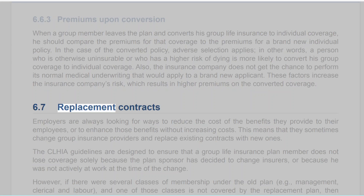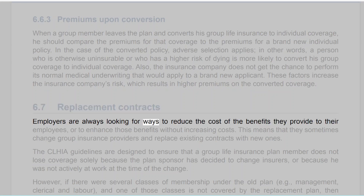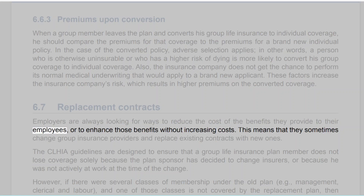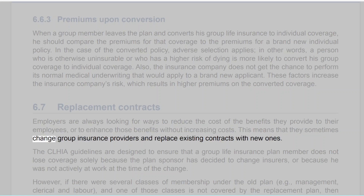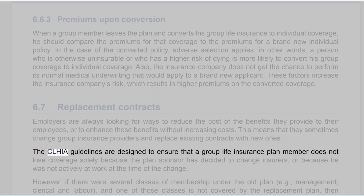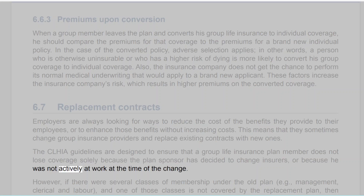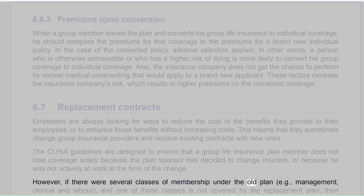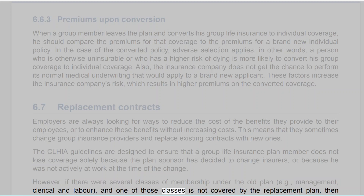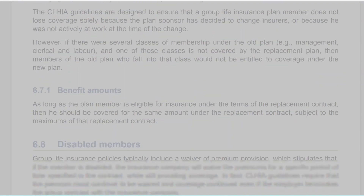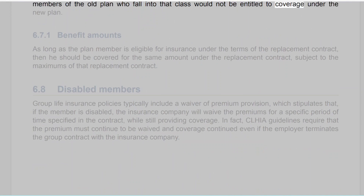6.7 Replacement Contracts. Employers are always looking for ways to reduce the cost of the benefits they provide or to enhance those benefits without increasing costs, which means they sometimes change group insurance providers and replace existing contracts with new ones. The CLHIA guidelines are designed to ensure that a group life insurance plan member does not lose coverage solely because the plan sponsor has decided to change insurers or because he was not actively at work at the time of the change. However, if there were several classes of membership under the old plan — such as management, clerical and labor — and one of those classes is not covered by the replacement plan, then members of that class would not be entitled to coverage under the new plan.